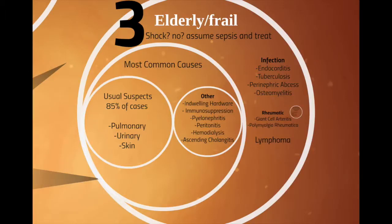If there's no obvious source after checking those, ask yourself: am I missing immunosuppression, a draining catheter, peritoneal dialysis, hemodialysis, or ascending cholangitis? That's a big deal. And they'll have ascending cholangitis even without pain — fever without abdominal pain can be ascending cholangitis in an elderly frail patient.